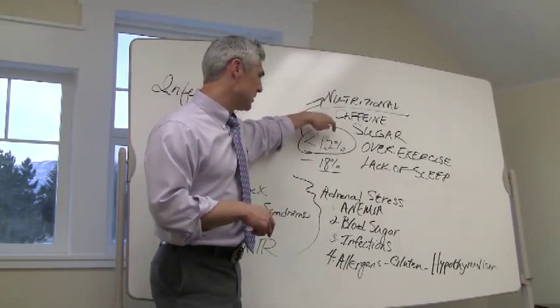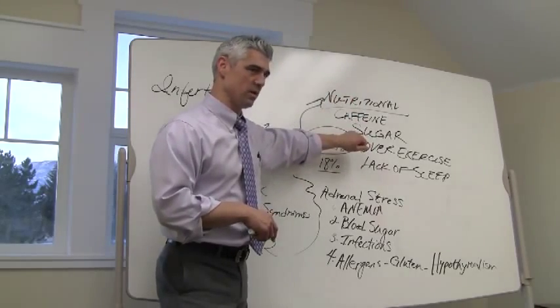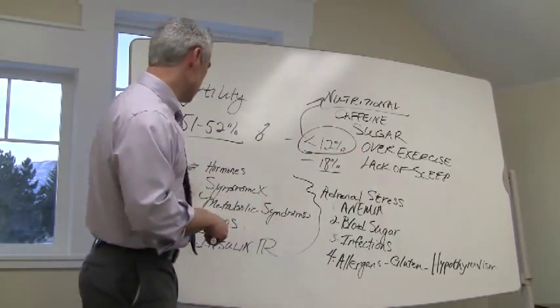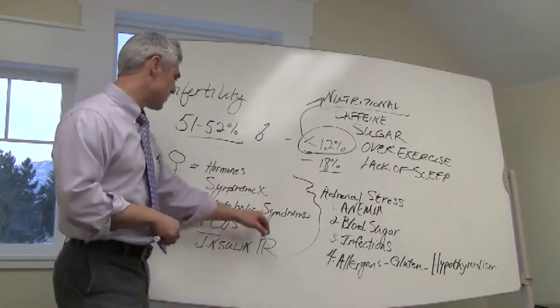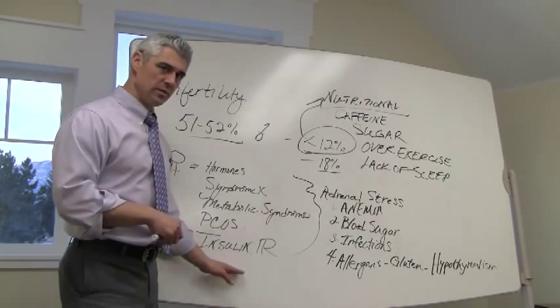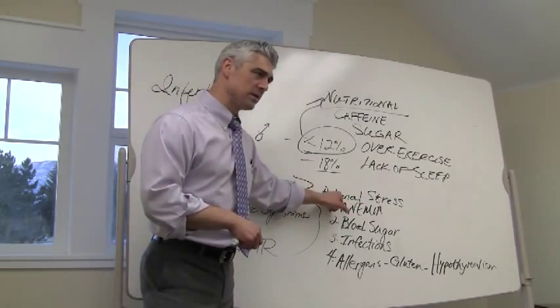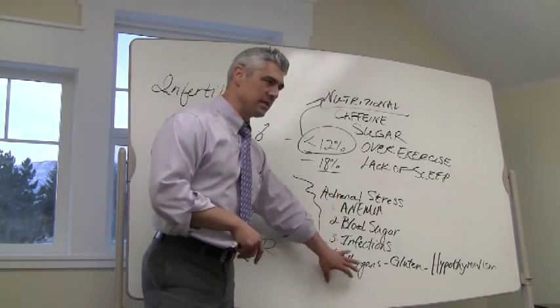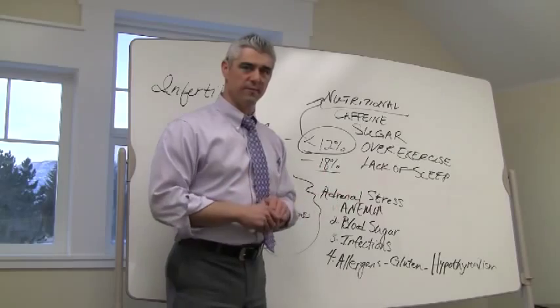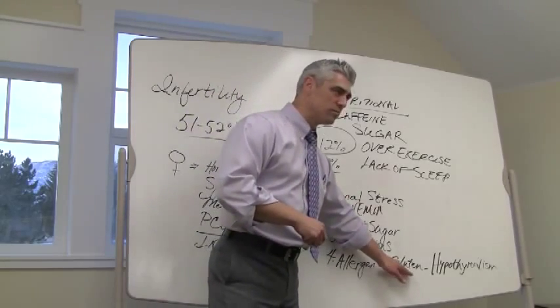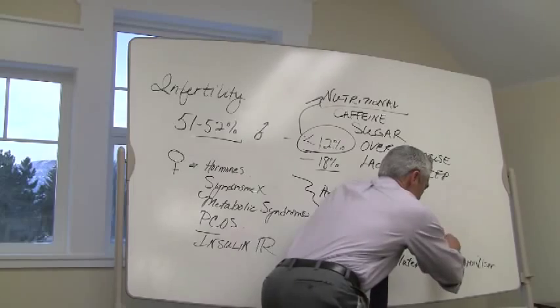Nutritionally, we see a primary driver to this that impairs it. Caffeine, sugar, overexercise, and lack of sleep being the primary drivers in the male for reducing testosterone production and adrenal stress. In the female, we look at hormonal imbalances. We're looking at Syndrome X, metabolic syndrome, PCOS, and insulin resistance, which all are adrenal stressors. And those deal breakers for recovering the adrenals are anemia, blood sugar, infections, and allergens. And primarily food allergens, with gluten being the most common food allergen that we're looking at, because of its autoimmune antibody production that attacks the thyroid and causes a condition called Hashimoto's hypothyroidism.